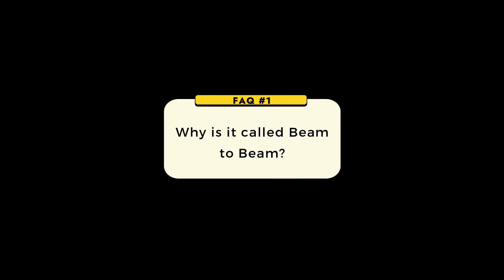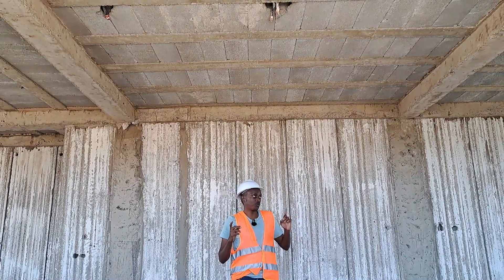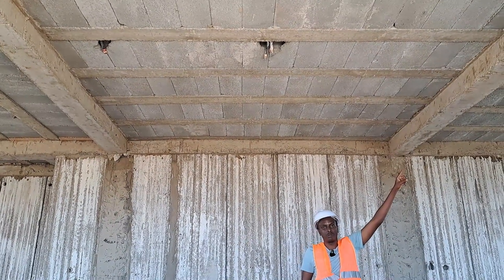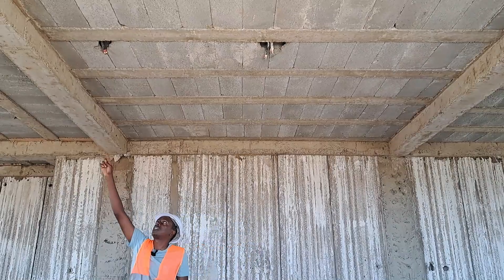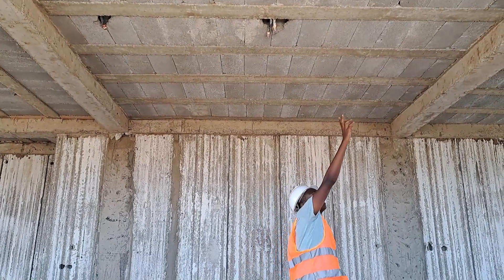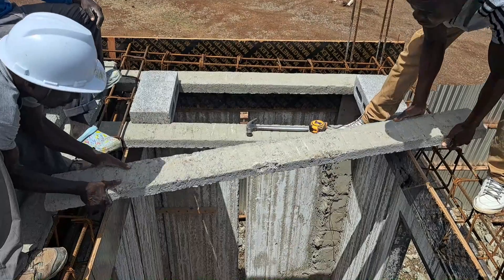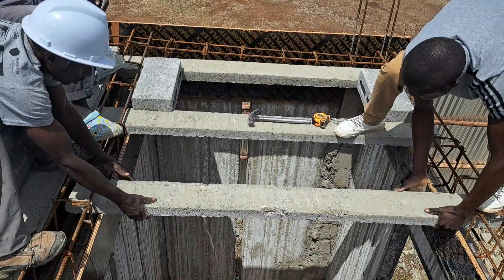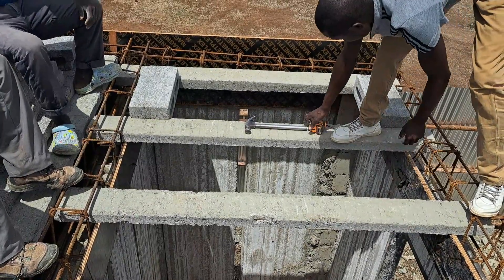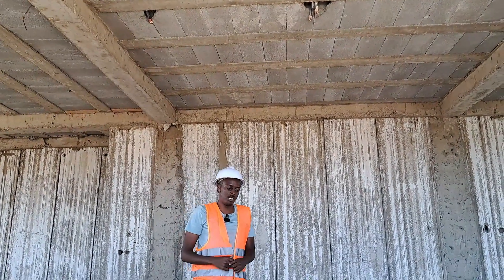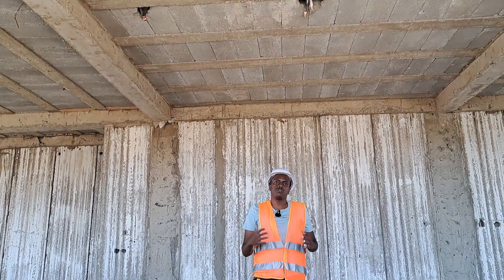The first question is: why is it called beam-to-beam technology? To answer that, we need to look up. As you can see here, we have two types of beams — this reinforced beam here and this other reinforced beam over here. It's called beam-to-beam because these pre-stressed beams are placed right in the middle of one beam and stretch all the way to the other reinforced beam. So that's where it gets its name — beam-to-beam technology. You can call it beam and block technology or beam-to-beam, depending on what term you find comfortable.